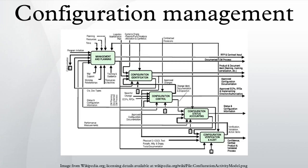CM is the practice of handling changes systematically so that a system maintains its integrity over time. CM implements the policies, procedures, techniques, and tools that are required to manage, evaluate proposed changes, track the status of changes, and maintain an inventory of system and support documents as the system changes.